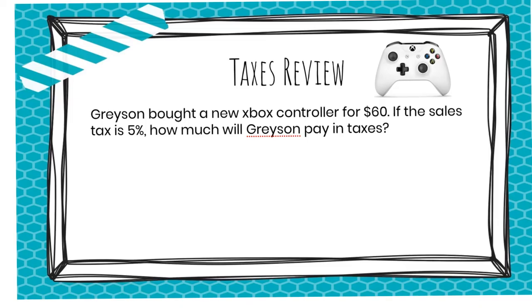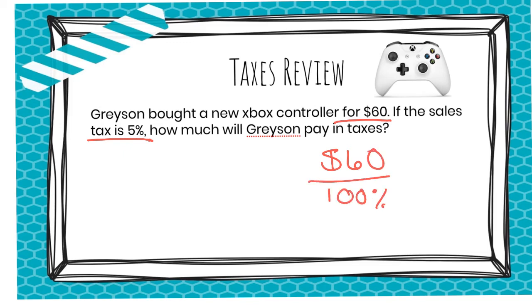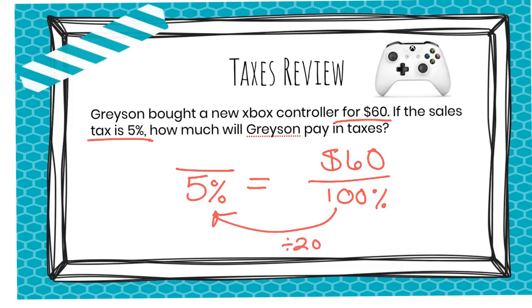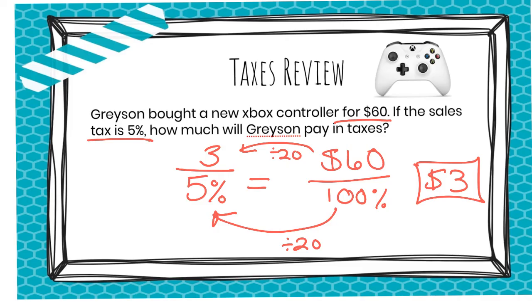Let's do a taxes review. Grayson bought a new Xbox controller for $60. If the sales tax is 5 percent, how much will Grayson pay in taxes? Our $60 is 100 percent because that's the total cost, and we are looking for 5 percent of that cost. To get from 100 percent down to 5 percent, we divide by 20, and 60 divided by 20 is 3. So he is going to pay $3 in taxes. If you don't know that 100 divided by 20 is 5, just do 100 divided by 5 to see what you should be dividing by.